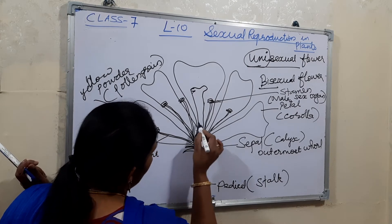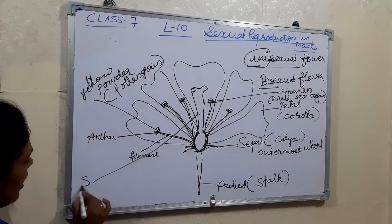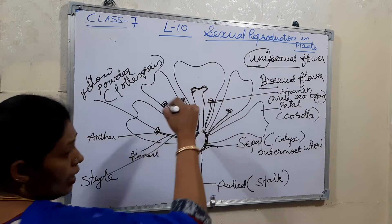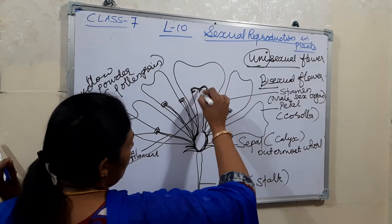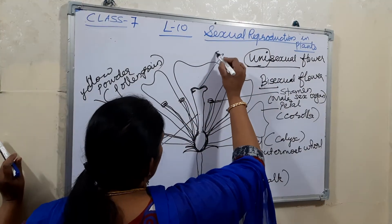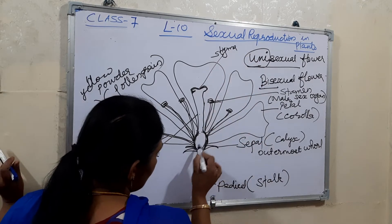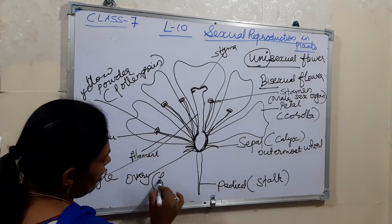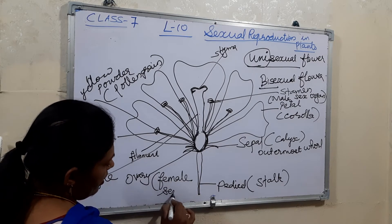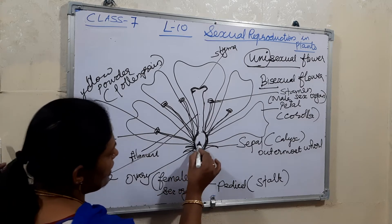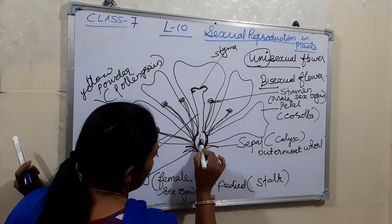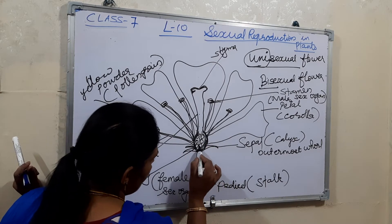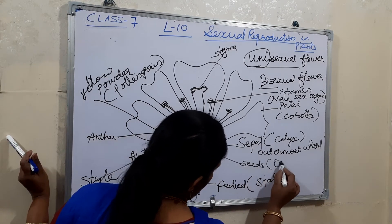The elongated tube is known as the style. This portion also produces a scent that helps attract insects. The top part is known as the stigma, and the swollen portion below is known as the ovary — this is the female sex organ. Inside the ovary, ovules are produced — these are the seeds.